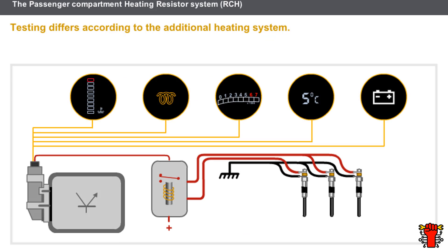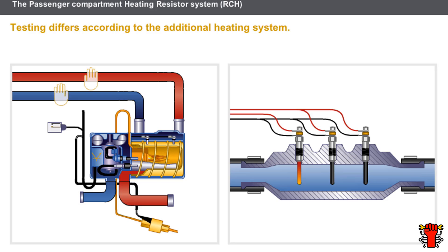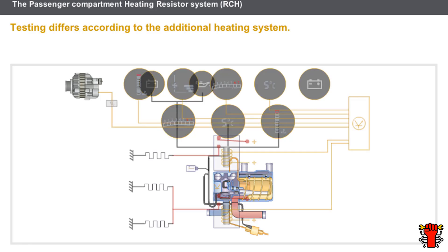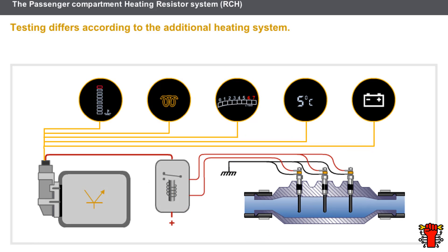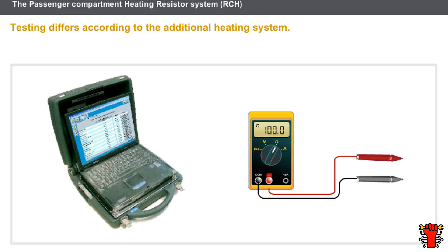Let us now look at the way in which different additional heating systems are tested. The thermo plunger system is checked visually and electrically. The additional heating combustion and RCH systems are checked manually, electrically, and using the senses. The visual check of the three systems can be carried out by manipulating or checking the electrical connections. The additional heating combustion system may also require a fluids check. The electrical check on the three systems can be made using the fault-finding tool or the multimeter.